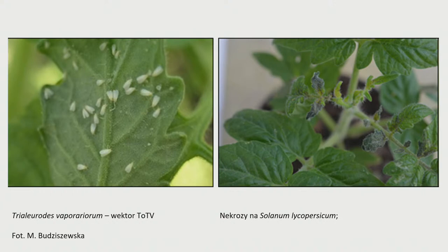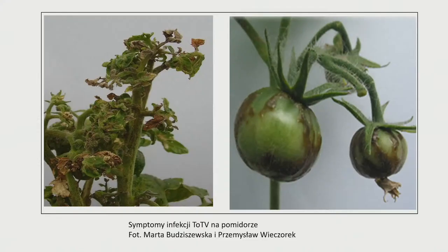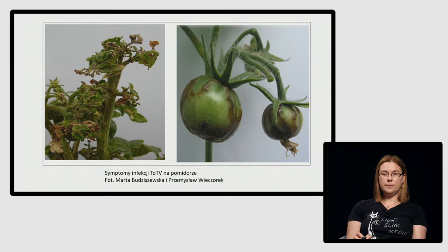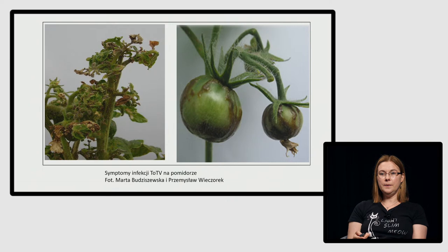Przykład, gdy roślinie nie udało się obronić: wirus nekrozy pomidora TOTV przeniesiony przez mączlika szklarniowego. Pojawiają się pierwsze objawy na liściach – nekrozy, obumieranie, rozprzestrzeniające się dalej na kolejne liście. Ten wirus po raz pierwszy został zidentyfikowany w Hiszpanii w pierwszej dekadzie XXI wieku. Farmerzy hiszpańscy nazwali go Torrado – co oznacza opalony ogniem – bo tak mniej więcej prezentowały się symptomy choroby. Znalazł się nawet na liście alertowej EPPO.